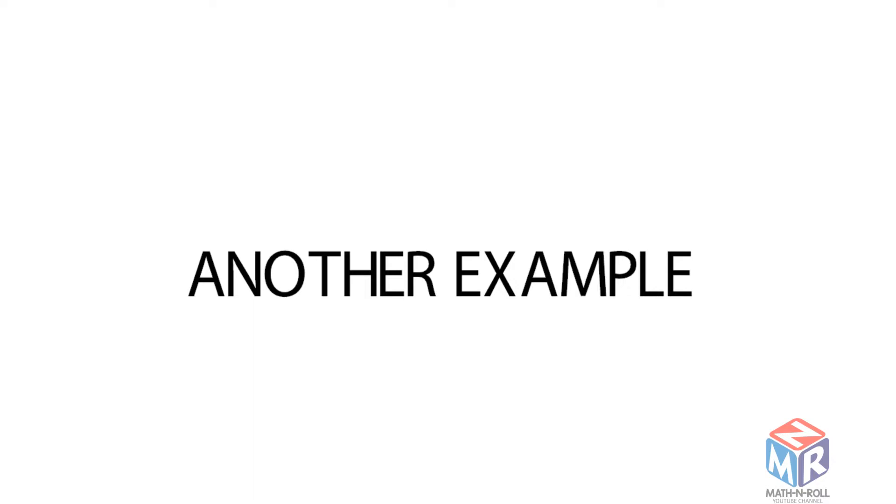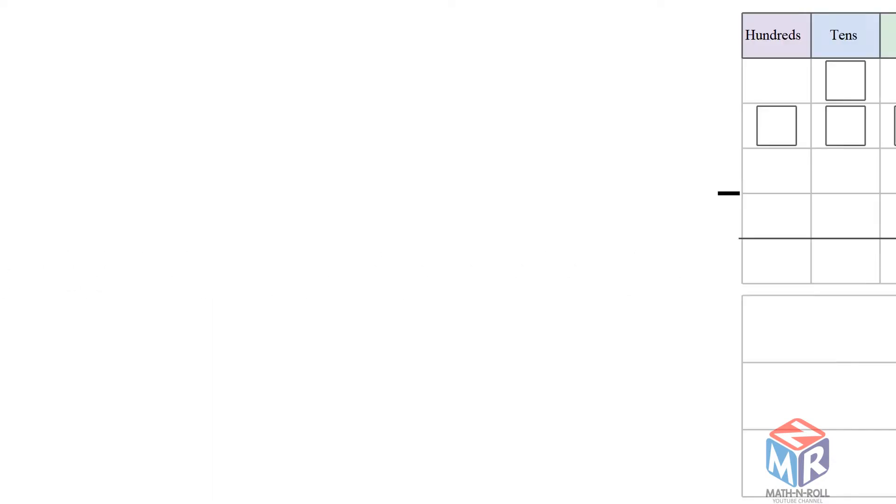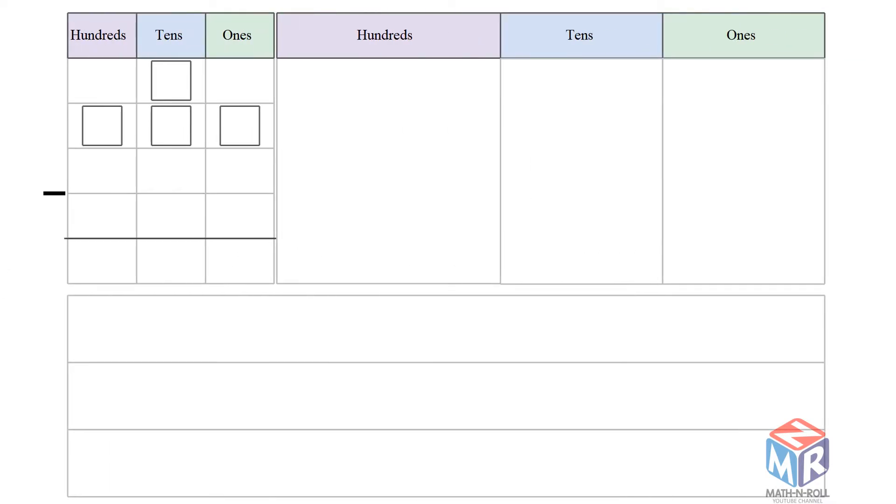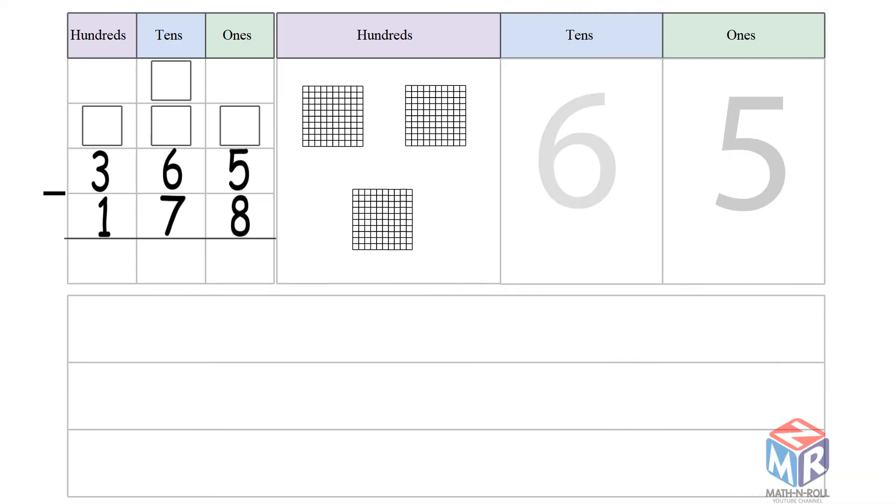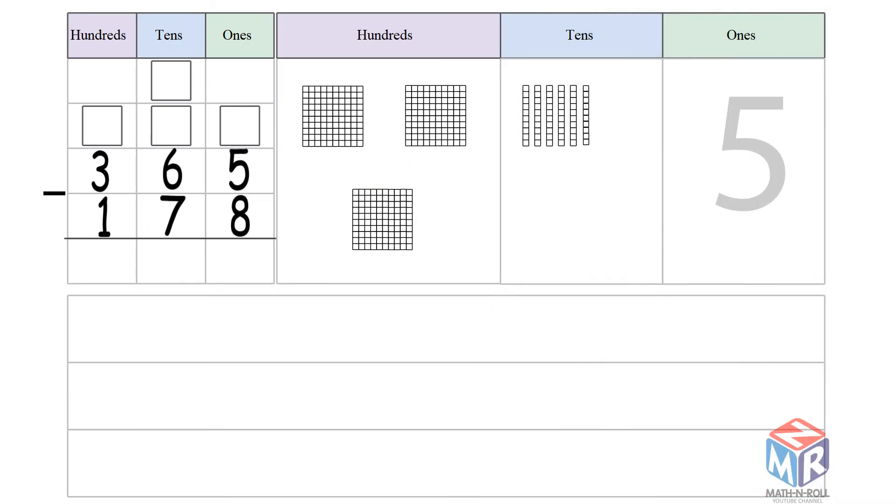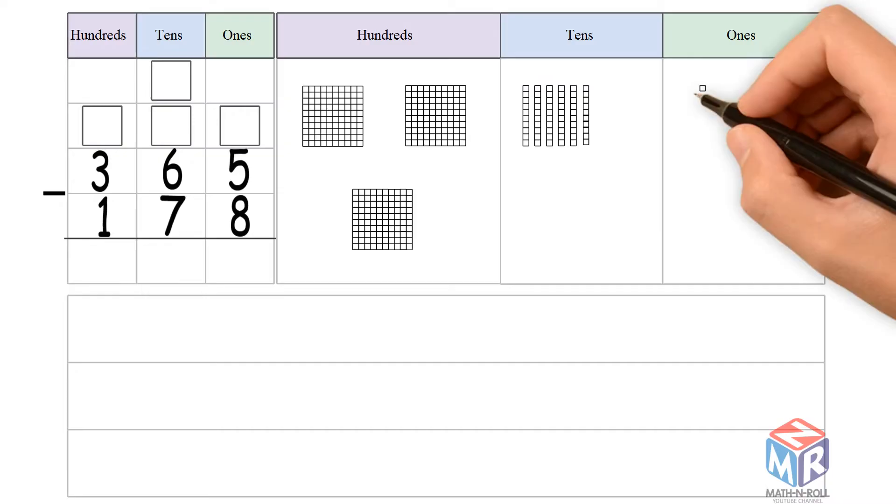Let's try another example. 365 minus 178. Let's draw it out. 365 has 3 hundreds, 6 tens, and 5 ones.